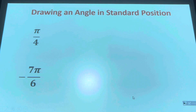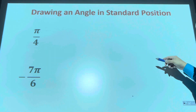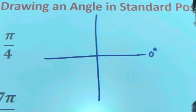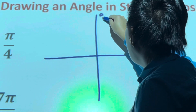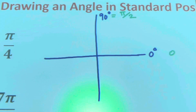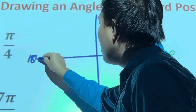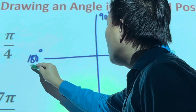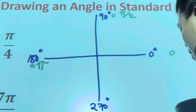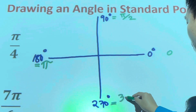What about angles given in radians — like pi over 4 or negative 7 pi over 6? The process is the same. Draw the Cartesian plane: zero degrees equals 0 radians, 90 degrees equals pi over 2, 180 degrees equals pi, and 270 degrees equals 3 pi over 2.